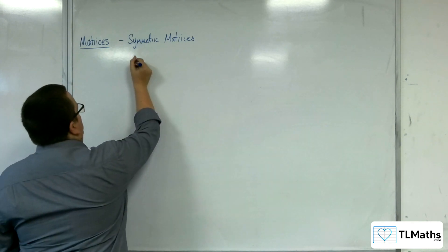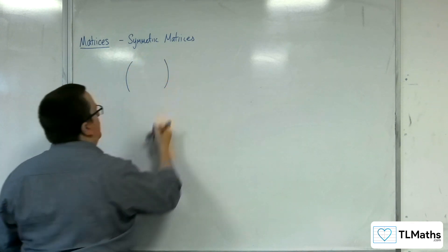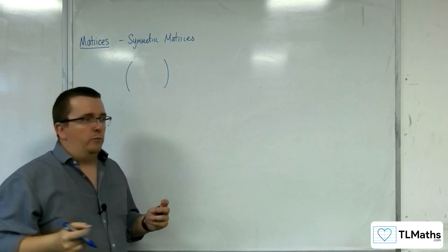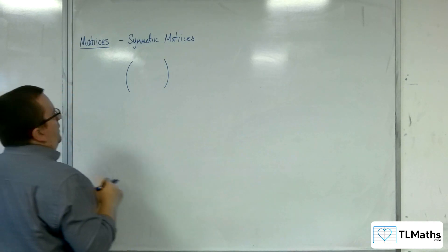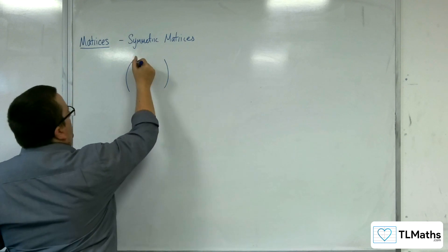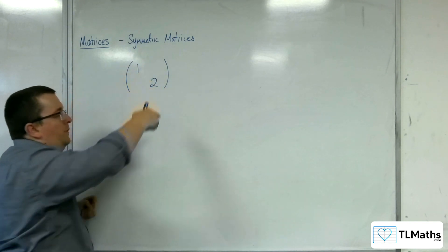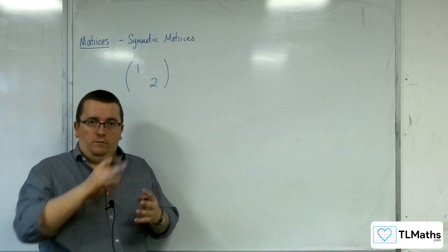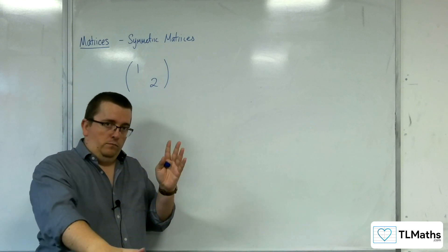A matrix is symmetric. I'll do a 2x2 matrix to start off with. A symmetric matrix is such that you can have anything in the top left to bottom right hand diagonal.